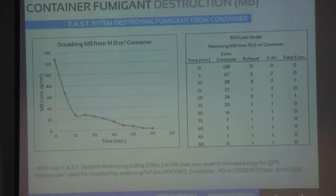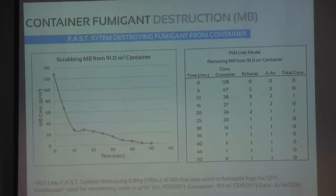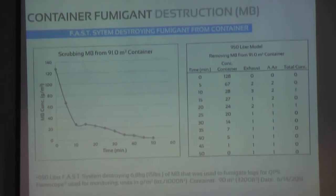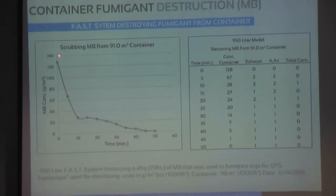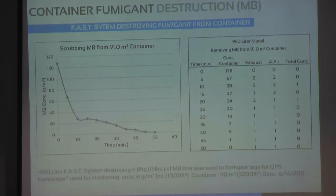This is data from a container fumigant destruction using methyl bromide. The point here is basically to show how fast it works. This was with our 250-gallon system, the largest one. You can see that at the beginning of scrubbing this container — this was fumigated with logs using about 15 pounds of methyl bromide. The container was about 91 cubic meters, which is about 3,200 cubic feet.